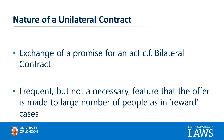A unilateral contract might exist where one party makes a promise to only one other party. If I lose my property and say to someone I know who is good at finding things, 'if you find my property, I will pay you this sum of money,' it is just as much a unilateral contract — an exchange of a promise for an act — even though it is only addressed to one person.